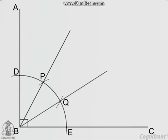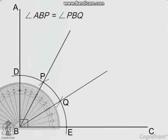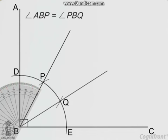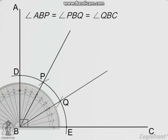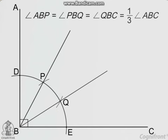BP and BQ trisect the right angle ABC. Thus, angle ABP equals angle PBQ equals angle QBC equals one-third of angle ABC.